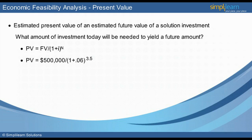So, future value FV of $500,000 is divided by 1 plus 0.06 to the power of 3.5, where 0.06 is the discount rate and the exponent 3.5 is the time period in years. It works out that the present value today needed to invest is approximately $407,755, to receive the future benefit of $500,000.